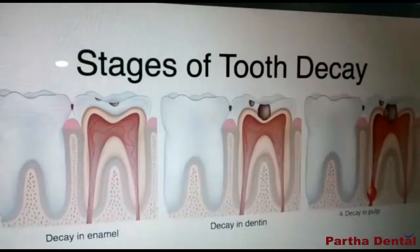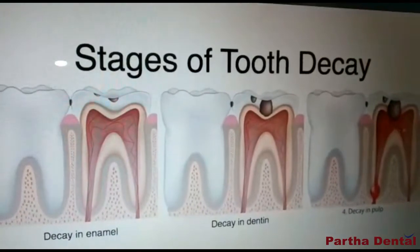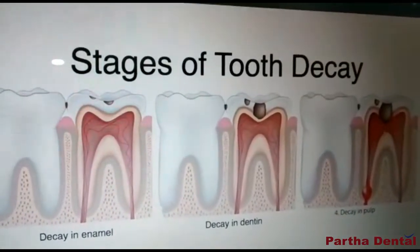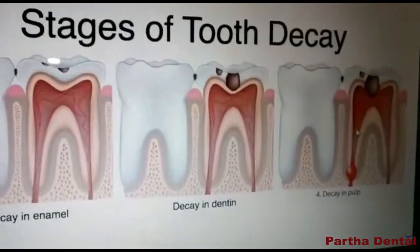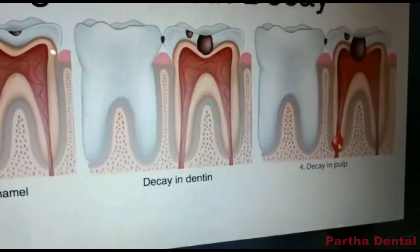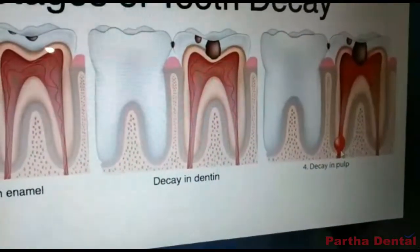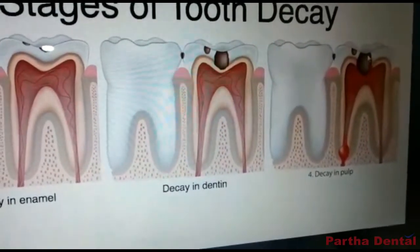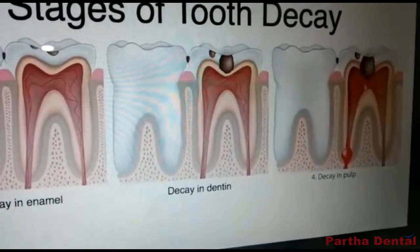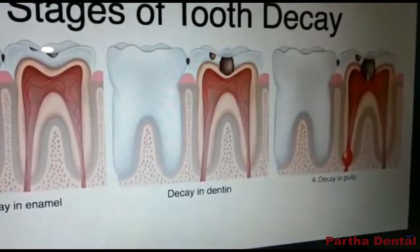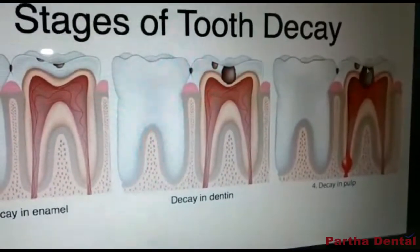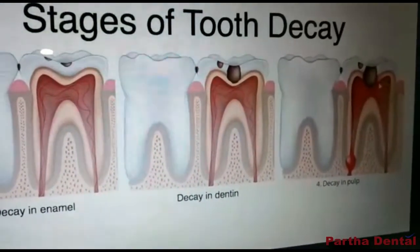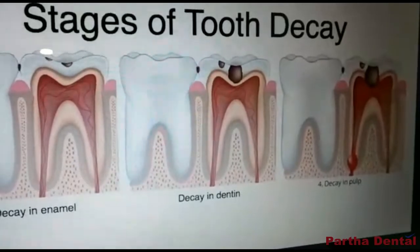But once the decay progresses into the centermost portion of your tooth, there will be pain and infection. In severe cases, there will be pus formation as well. So we need to do something called a root canal treatment, because a regular filling won't treat this tooth.